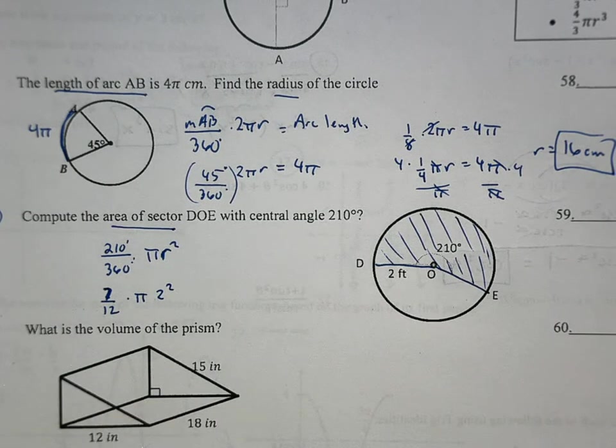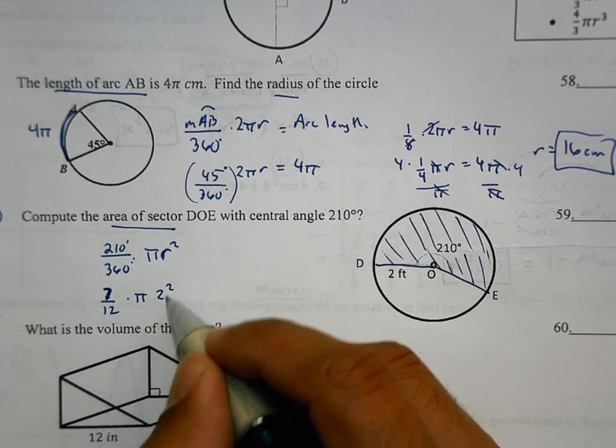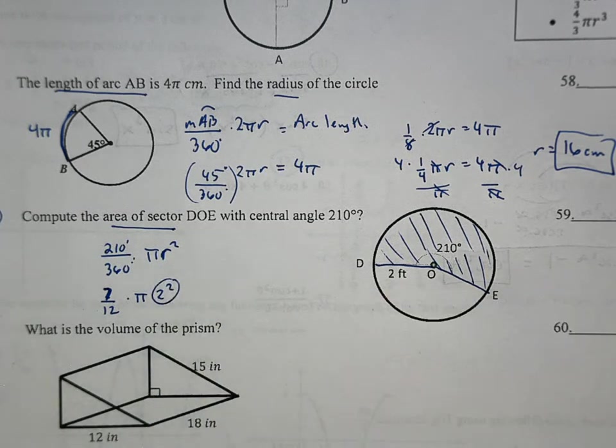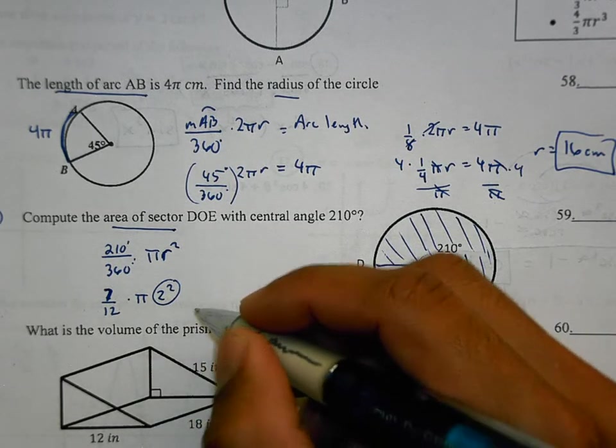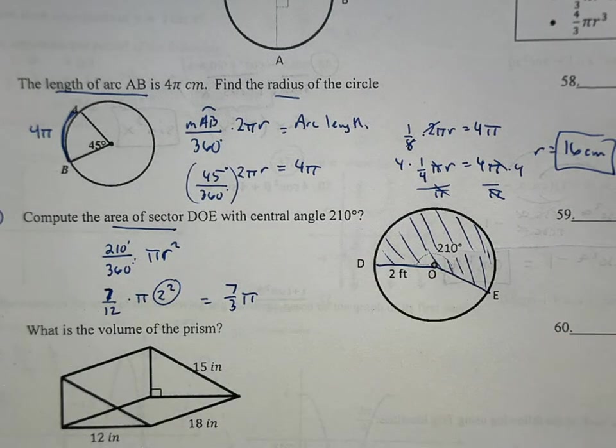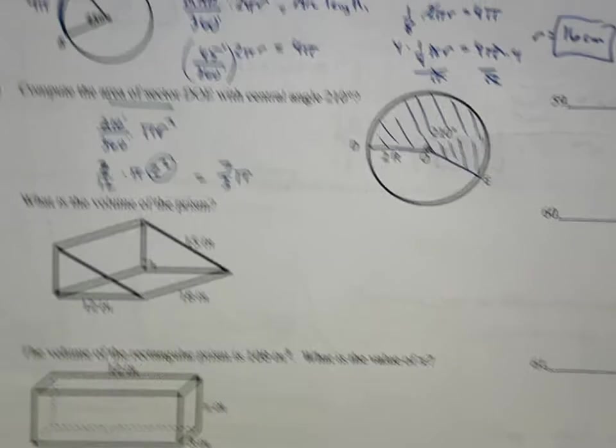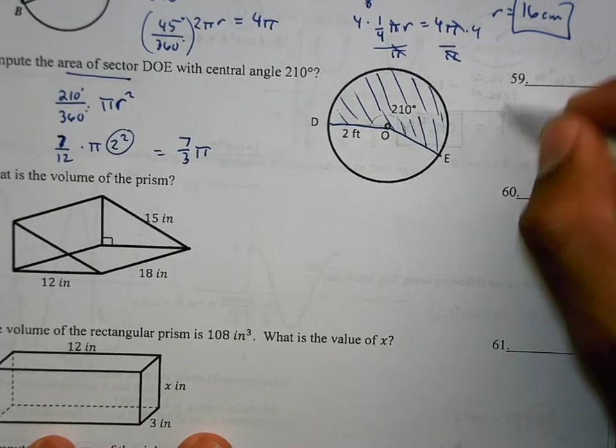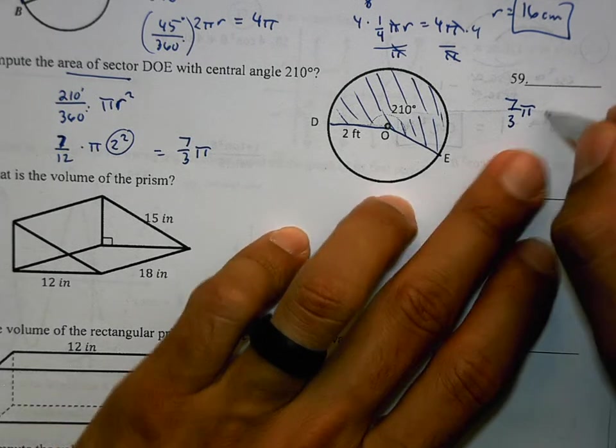So if I want to know what the area is, it's going to be 7/12 times π times 4, which comes out to 7/3π. It does not tell me whether I should leave answer in terms of π or round to the nearest decimal place, so I'm going to write my answer as 7/3π feet squared.